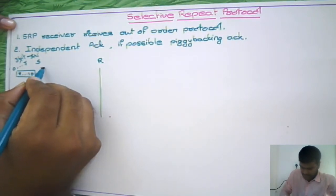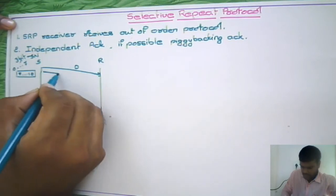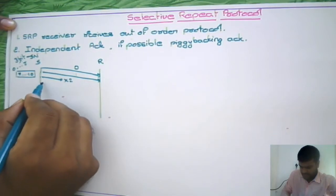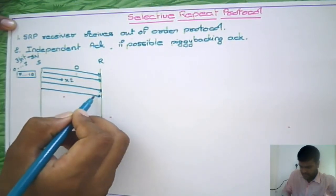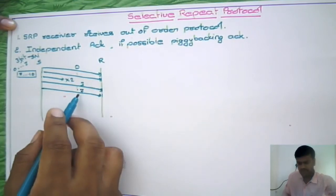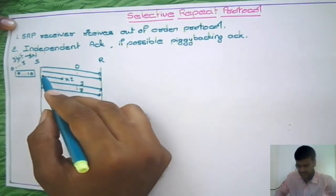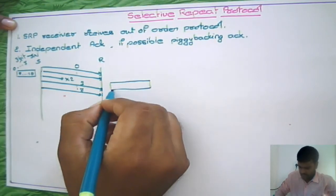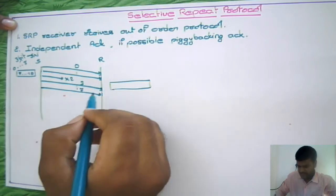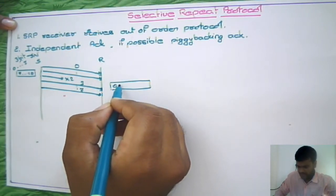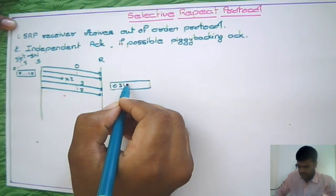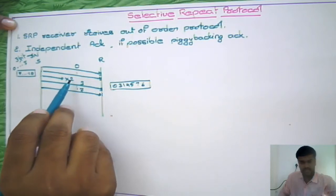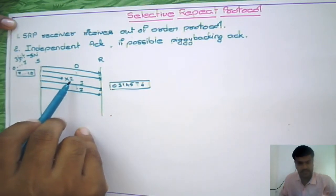This is the sender sending packets 0 to 7. Assume the second packet is lost, but the sender sends all the packets from the current window up to sequence number 7. Whenever the receiver receives the packets, it receives them in any order — for example: 0, 3, 1, 4, 5, 7, 6.